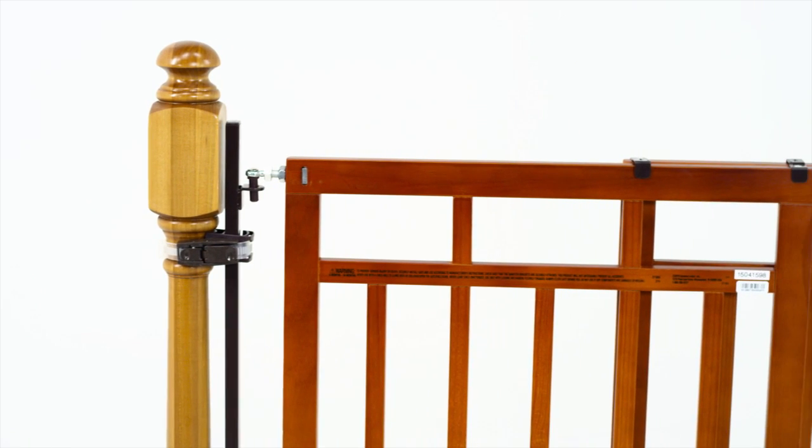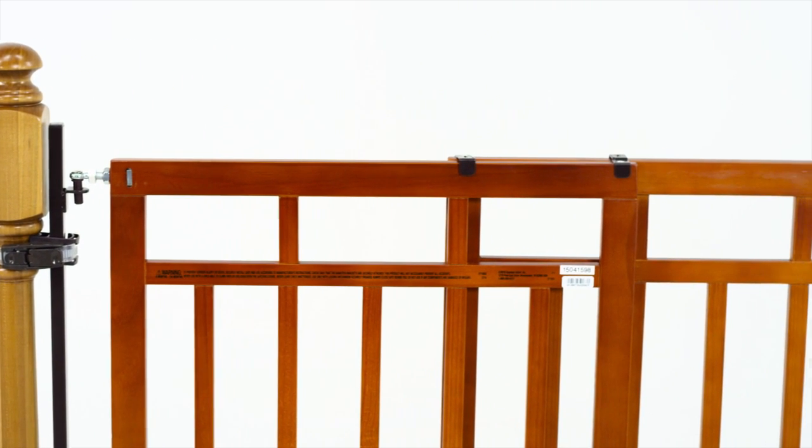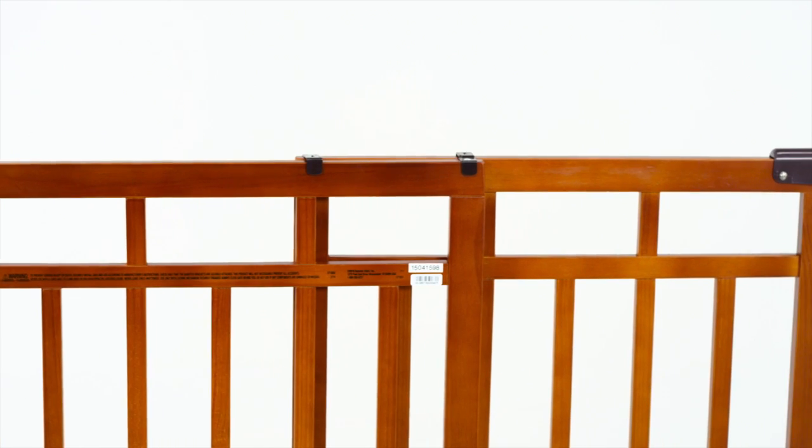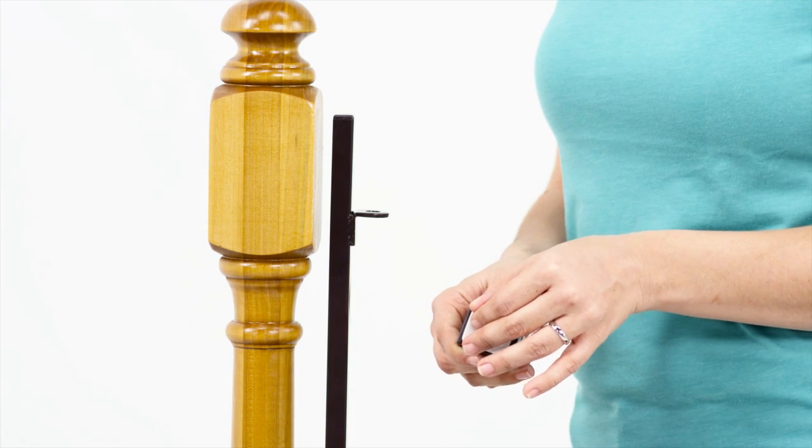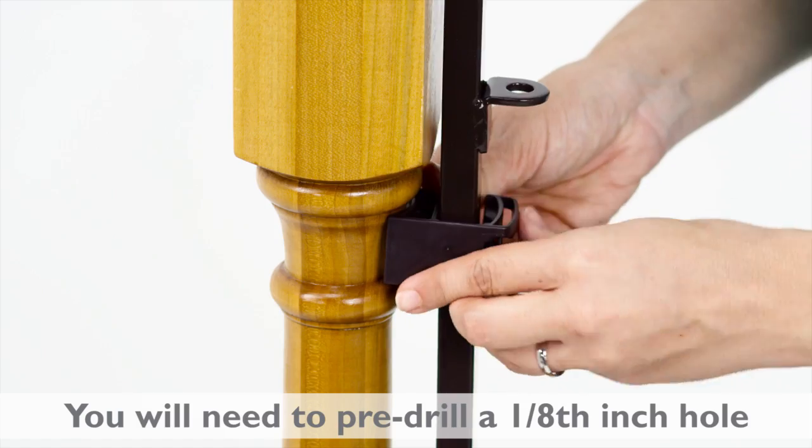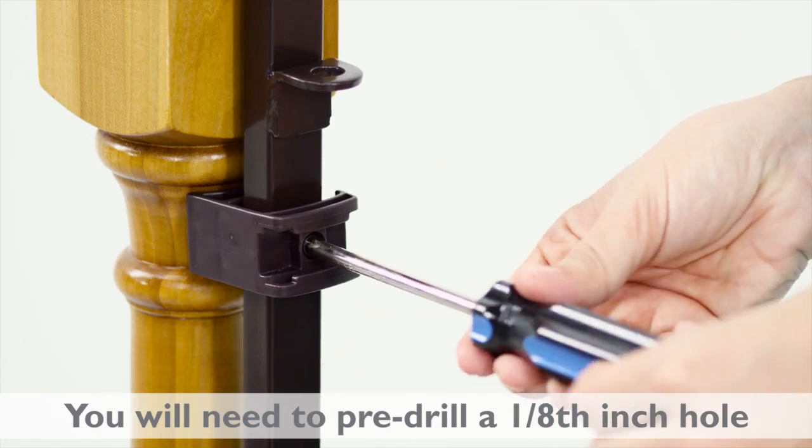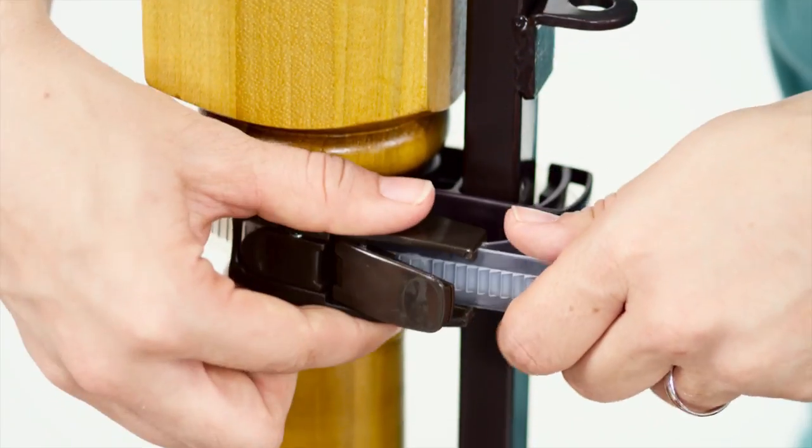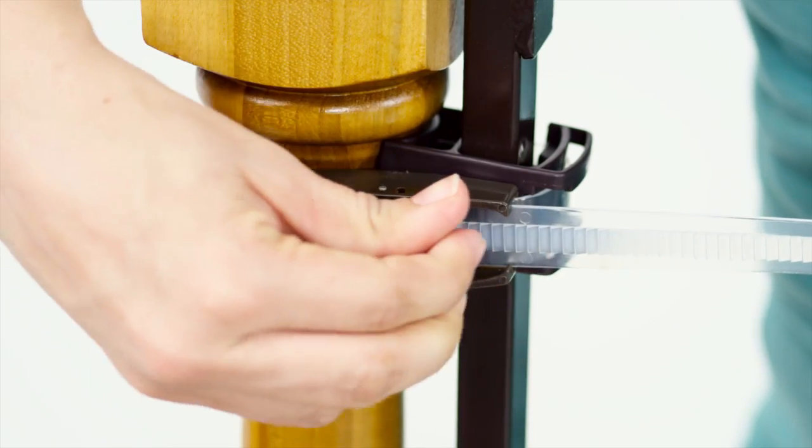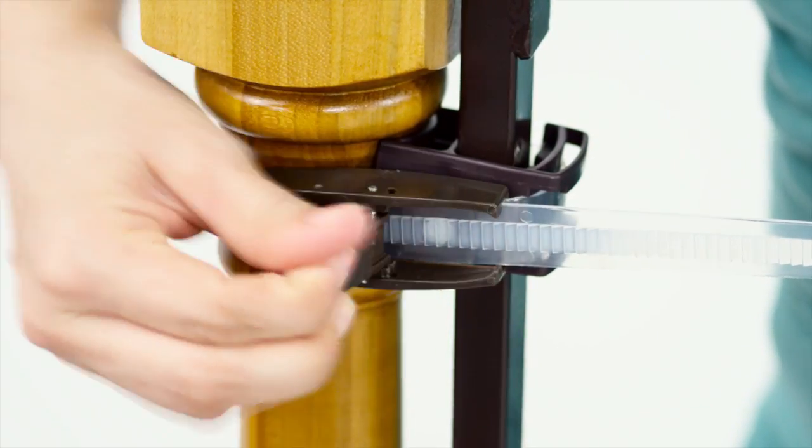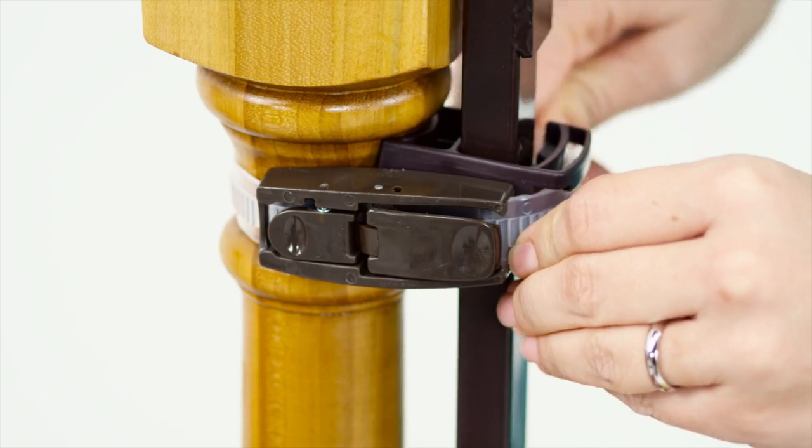For a round top banister, replace the top square adhesive bracket with one of the included C brackets. Line the C bracket up with the topmost hole on the support and screw to the banister. Secure C bracket with a ratcheting strap. Make sure the strap latch is flat and contacts both the banister and the C bracket.